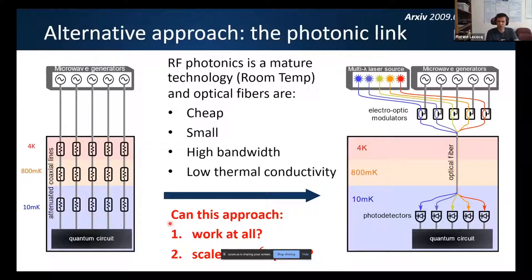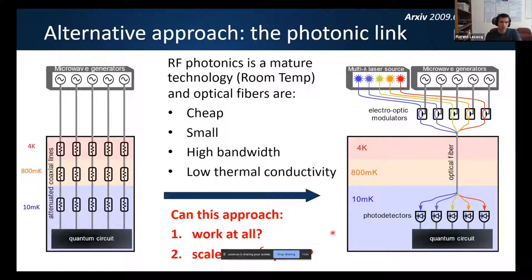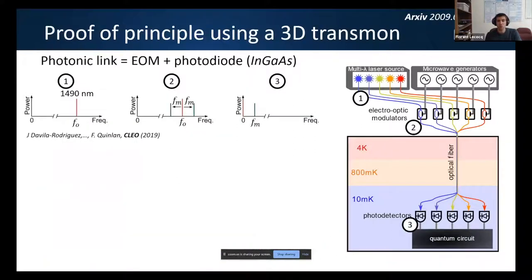Optical fibers can be cheap and small, but more importantly they have 10 THz of bandwidth and very low thermal conductivity. The key questions: does it work at all? Bringing light into close proximity of a quantum circuit has always scared the community — photons can break superconductivity and degrade coherence. Do we have light leakage? And what is the heat load — can it scale to a million qubits?